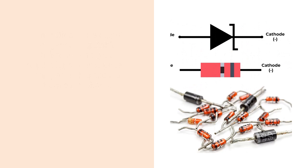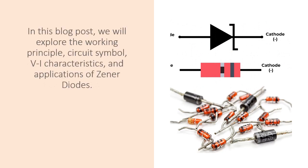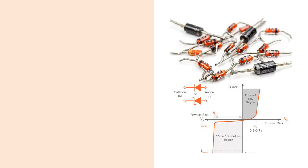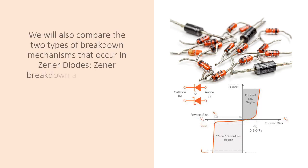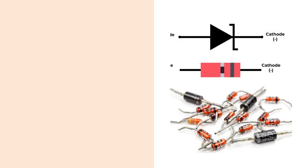In this blog post, we will explore the working principle, circuit symbol, VI characteristics, and applications of Zener diodes. We will also compare the two types of breakdown mechanisms that occur in Zener diodes: Zener breakdown and avalanche breakdown.